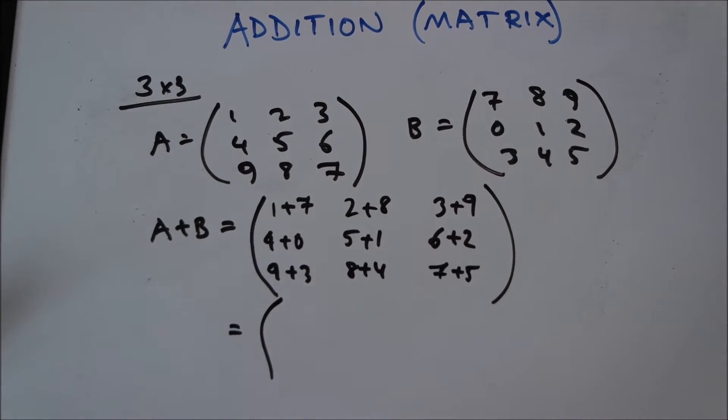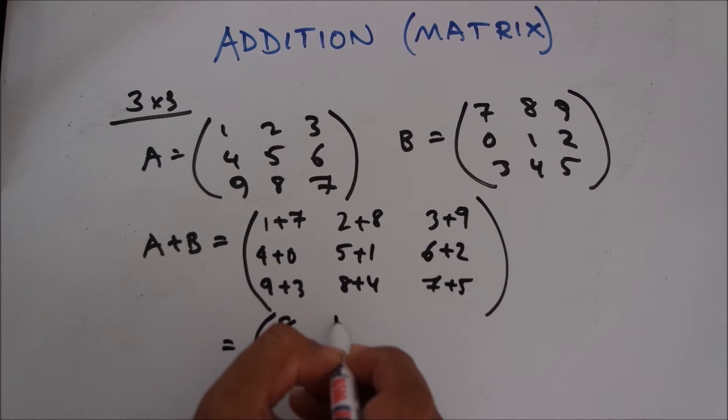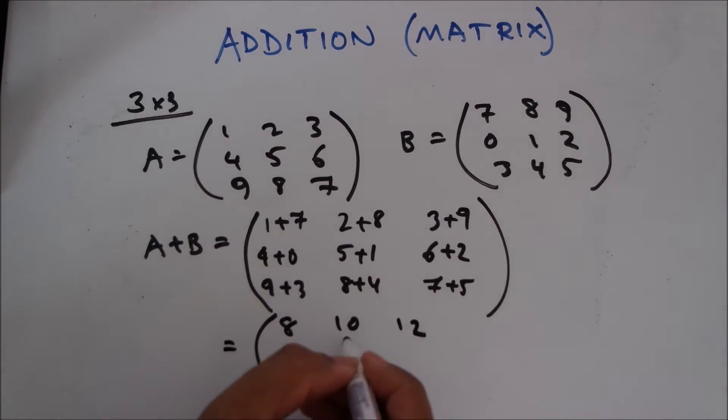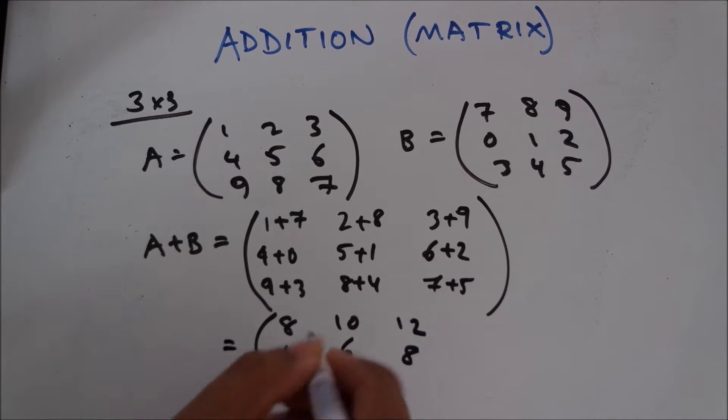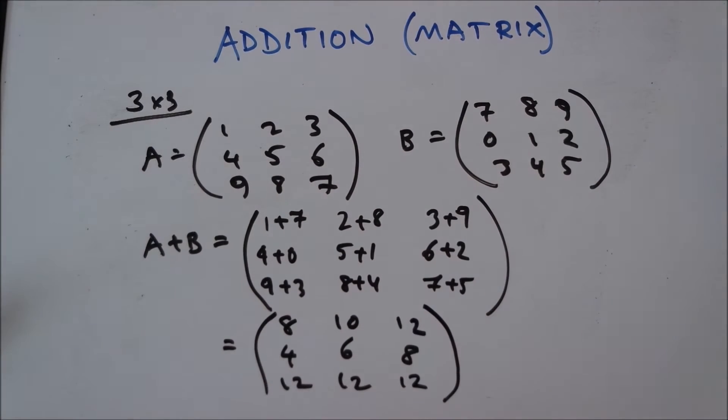This gives you a result of 8, 10, 12, 4, 6, 8, 12, 12, 12. So that's pretty much it for addition, and now we're going to move on to the subtraction of matrix.